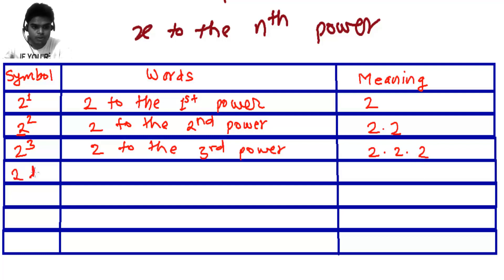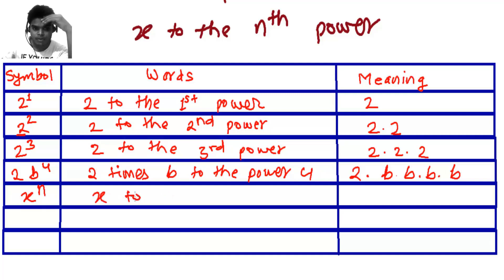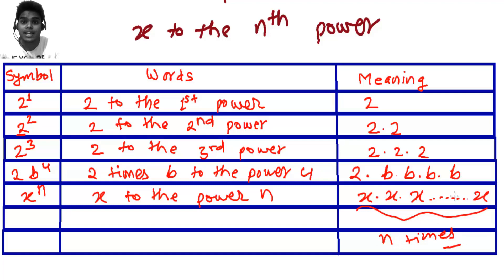Now, let's say 2B to the power 4. This means B is multiplying with itself 4 times. The factor is 4 - 1, 2, 3 and 4. Now, let's say X to the power N. X raised to the power N, which means X times X times X till X. This is how many times? N times. This X is repeating N number of times. This is what means variables raised to certain powers.